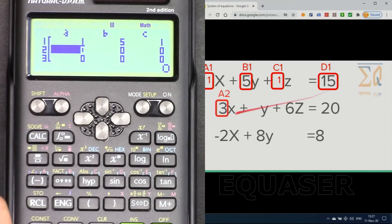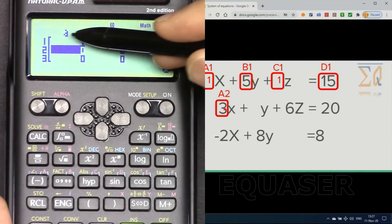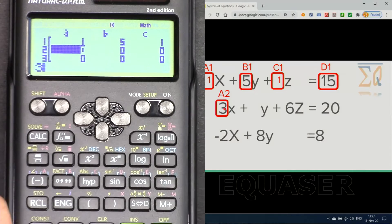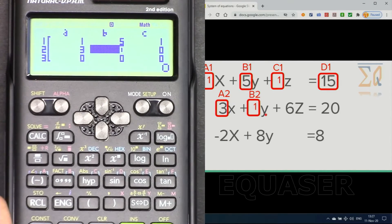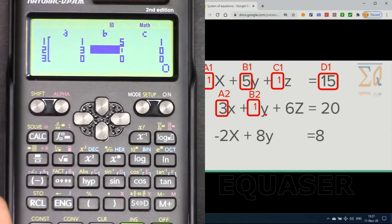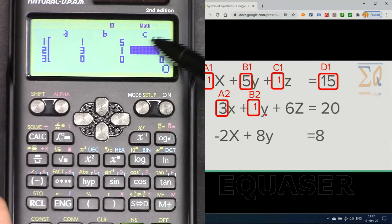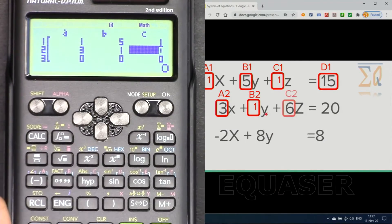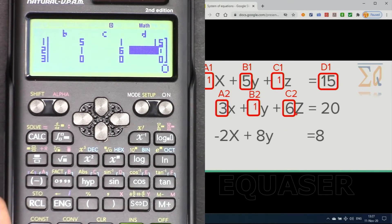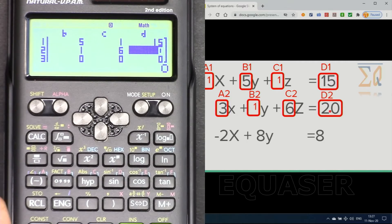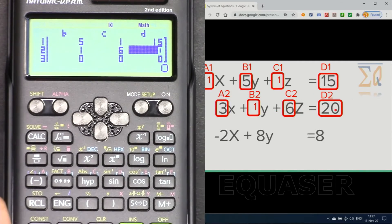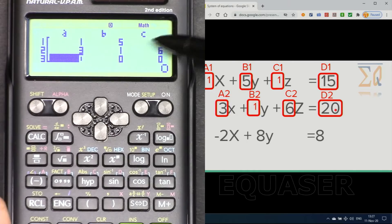3 for a2, and then b2 is 1. I'm pressing 1 and it moves to c2. c2 is 6. And as you can see, and then d2 for the equation, d2 is 20 and then press equal. It moves now in equation number 3.